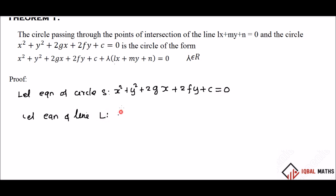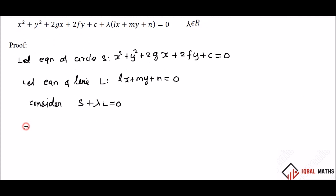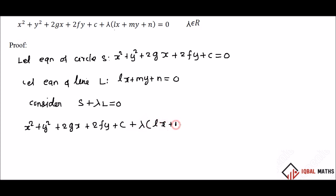What we are doing is we can use the formula. Let the equation be x plus lambda l equals 0. So let the equation be x square plus y square plus 2gx plus 2fy plus c, into lambda into l, L equal to 0.